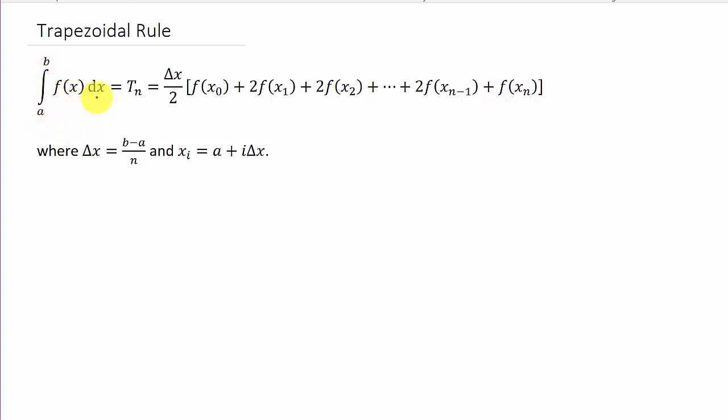But here's the trapezoidal rule. It says the integral from a to b of f of x dx. So, t sub n is delta x over 2 times f of x naught plus 2 times f of x1 plus 2 times f of x2 and then all the way to f of x sub n. Now, notice here that we've got 2 multiplied by everything in here except for the first and last term. That doesn't get multiplied by 2.